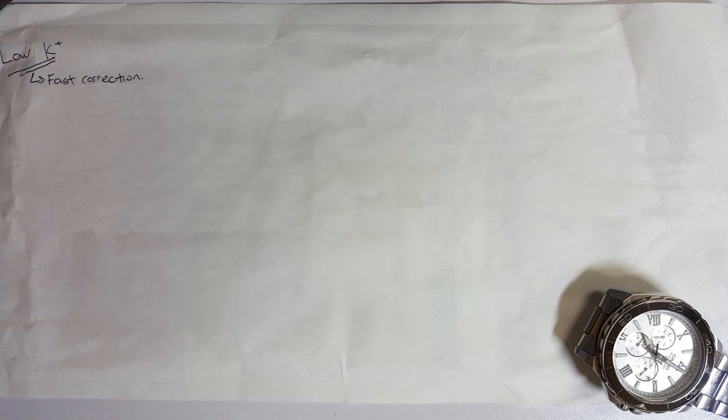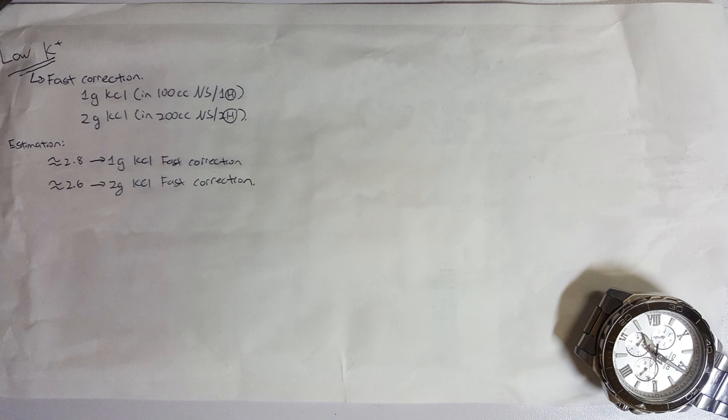It usually is 1 gram of KCL fast correction or 2 grams of KCL fast correction. Some departments allow us to use our gut feeling to decide how much gram of KCL to fast correct. Usually when the patient comes in with potassium level of around 2.8 to 3, we will correct it with 1 gram of KCL. And when the potassium level is really low like 2.6, we will give 2 grams of KCL fast corrections.